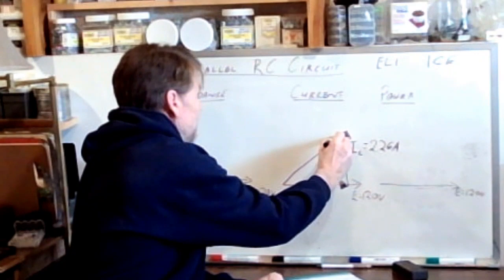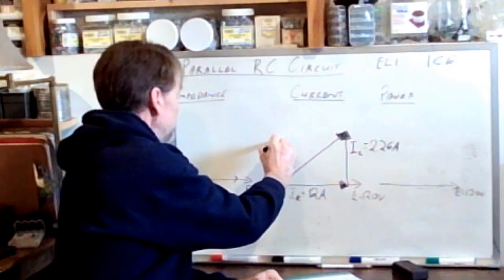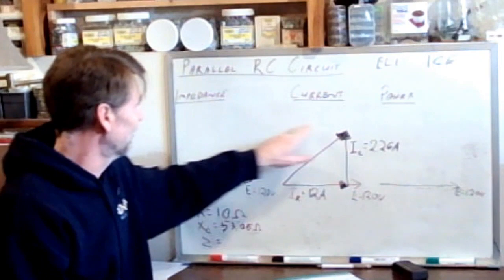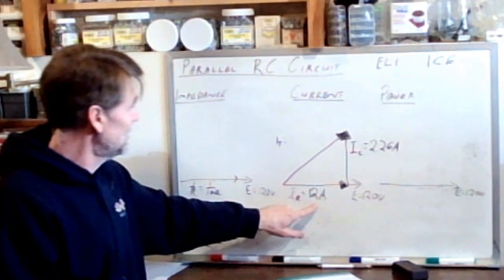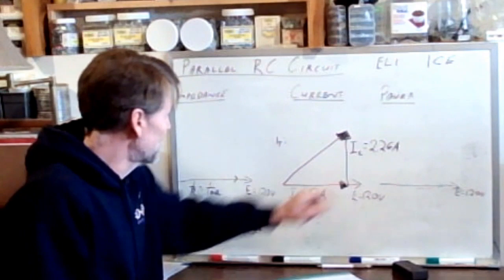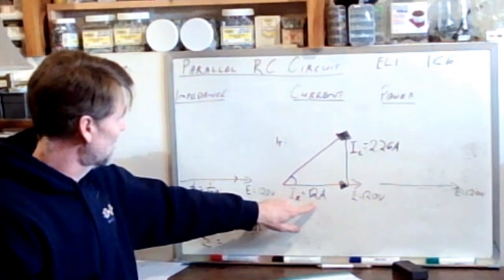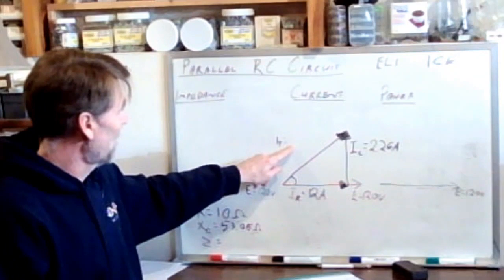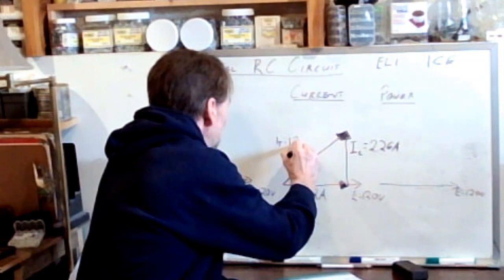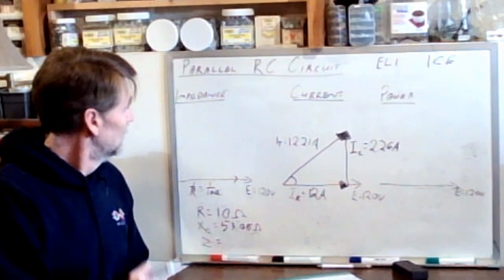So now here we can draw our hypotenuse for our current triangle, and we can determine the total current, IT. And here now we can use Pythagoras to determine the total current in our circuit. So I can see that with 12 amps here in the adjacent, and 2.26 amps here on the opposite, this is going to be a fairly small number, which means this is going to be something just a little bit bigger than 12. So we calculate the hypotenuse using Pythagoras, and we get 12.21 amps.